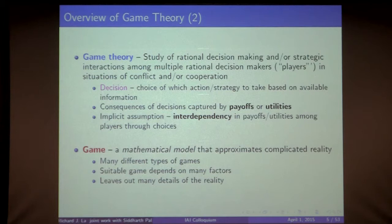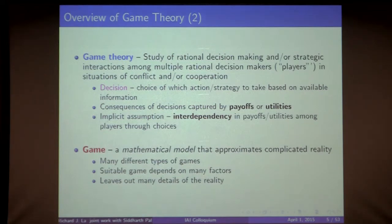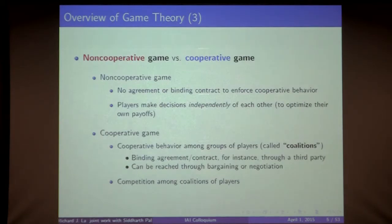Game theory is often used to study interactions in situations of conflict or cooperation. Decisions are choices agents make based on available information, and the consequences of those choices are captured by payoffs or utilities. The implicit assumption is that there is some form of interdependency in payoffs among the agents — otherwise you simply have a straightforward optimization problem. A game is a mathematical model that approximates the reality we are interested in studying.